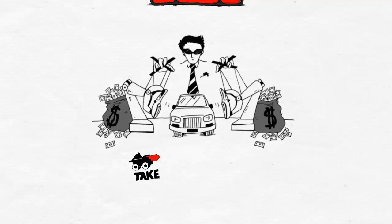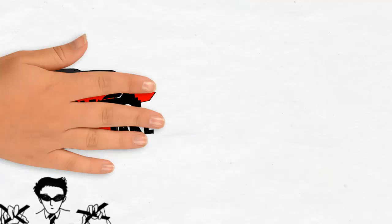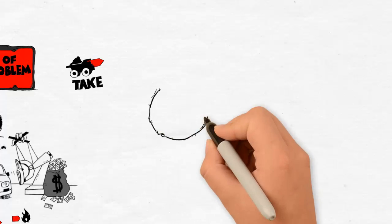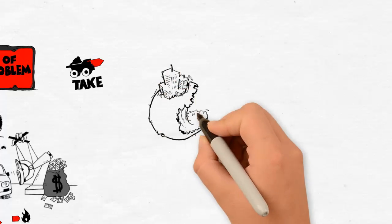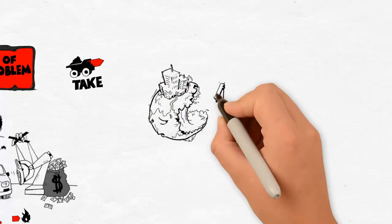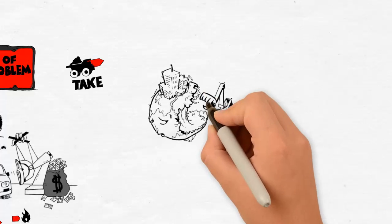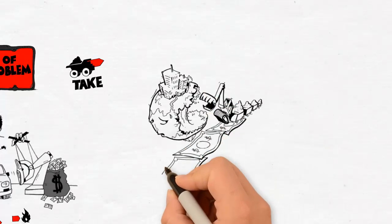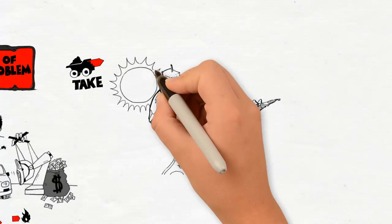The so-called take-make-waste model. Take: a number of raw materials are extracted from the earth to manufacture car components, but overall reserves of some key resources are rapidly approaching depletion. At current extraction rates, lead reserves will run out by half a century.